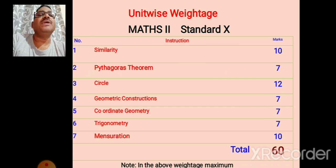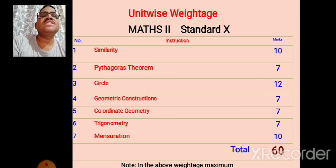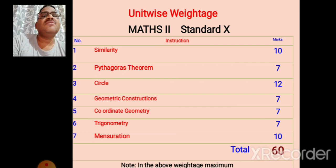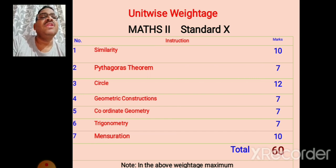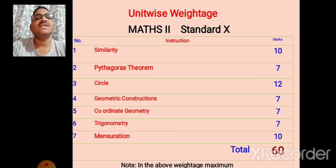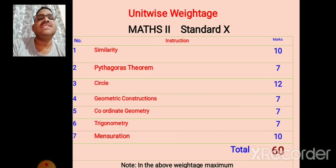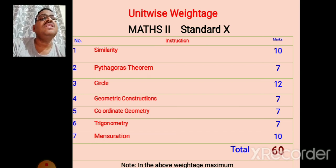Now we see Math Paper Second, that is geometry. In geometry there are seven chapters. Chapter one is similarity, 10 marks with options. Chapter two is Pythagoras theorem, 7 marks. Chapter three is circle, 12 marks. Chapter four is geometric construction, 7 marks. Chapter five is coordinate geometry, 7 marks. Chapter six is trigonometry, 7 marks. And the seventh chapter is mensuration, 10 marks. Total seven chapters are for 60 marks.